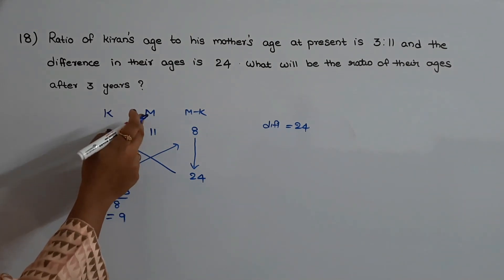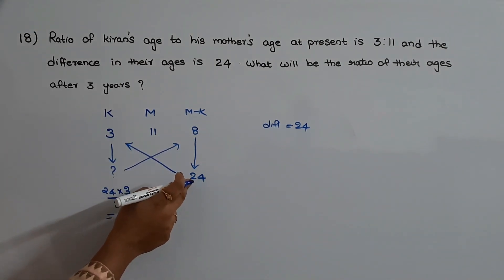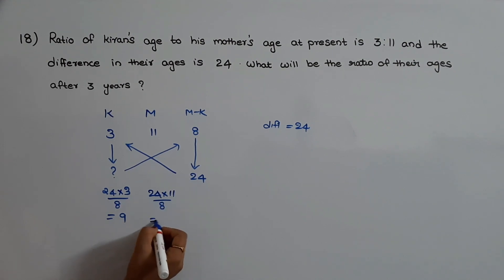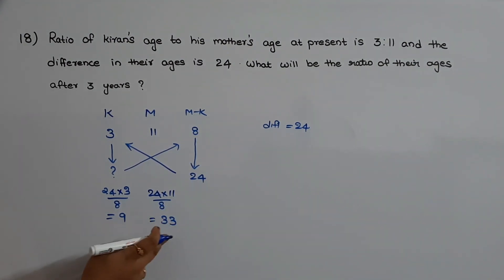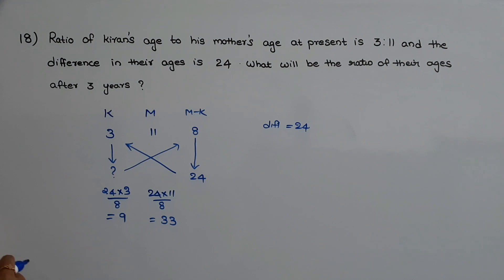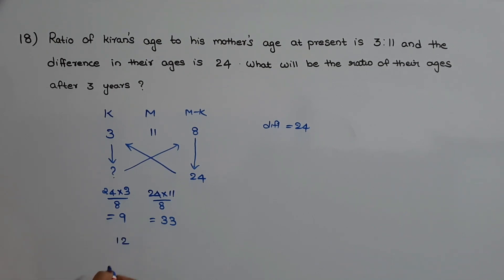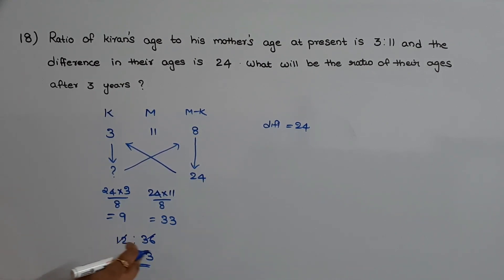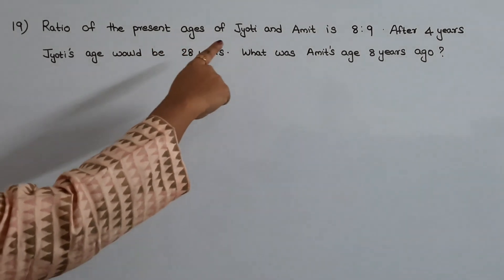Similarly, the present age of his mother equals 24 times 11 divided by 8, which equals 33. These are the present ages of Kiran and his mother. After 3 years, Kiran's age would be 9 plus 3 equals 12, and mother's age would be 33 plus 3 equals 36. So the ratio after 3 years is 12 to 36, which is 1 is to 3.